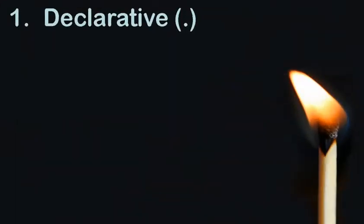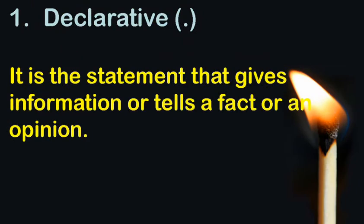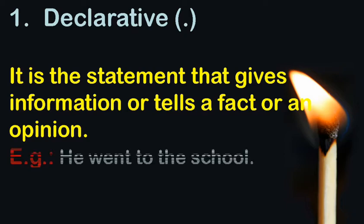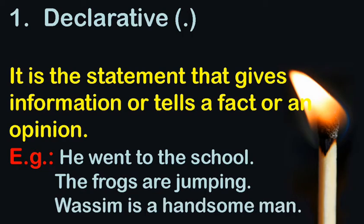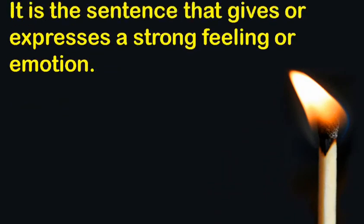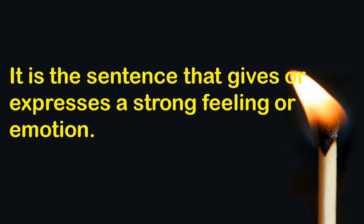What is a declarative sentence? It is a statement that gives information, tells a fact, or expresses an opinion. For example: 'He went to the school' — this tells a fact. 'The frogs are jumping' — also a fact. 'Wasim is a handsome man' — this is an opinion that carries information about someone.